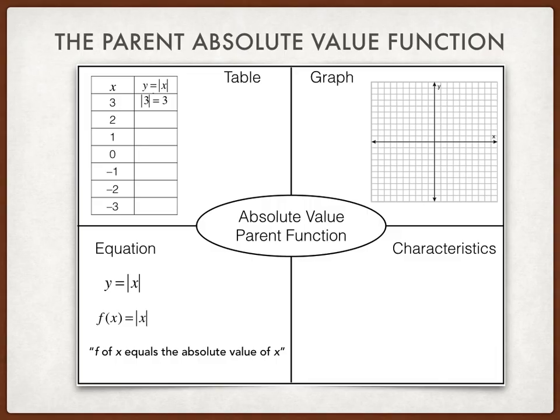So f of 2 is 2, f of 1 is 1, f of 0 is 0, f of negative 1 is 1 because the absolute value of negative 1 is 1. The absolute value of negative 2 is 2, and the absolute value of negative 3 is 3.